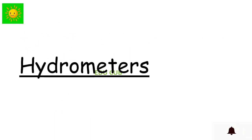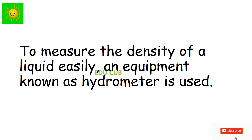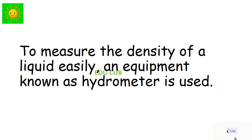Our next subtopic is hydrometers. If you want to find out the density of a liquid, you can measure the volume and mass of it and calculate the density as done in previous activities. But this is a time-consuming and difficult process. Therefore, to measure the density of a liquid easily, you use equipment known as the hydrometer.